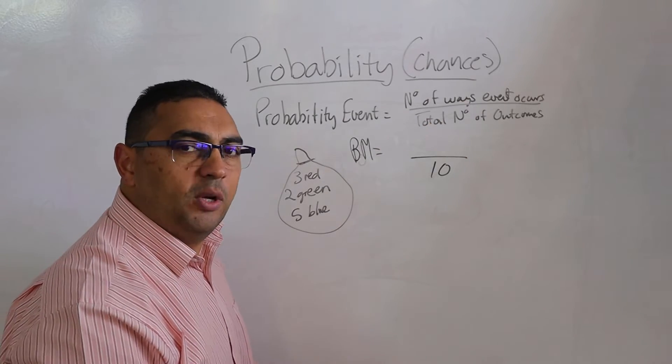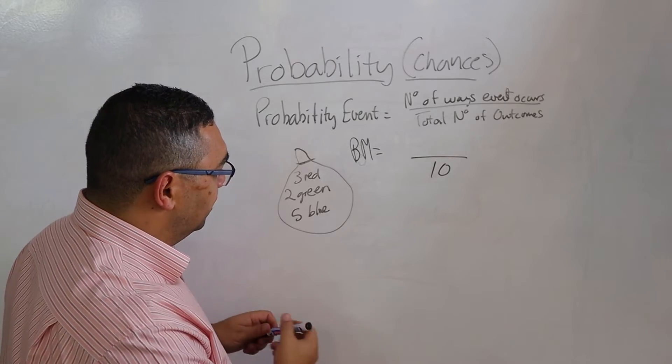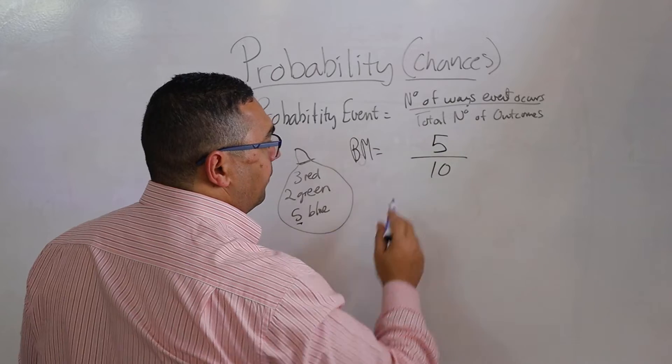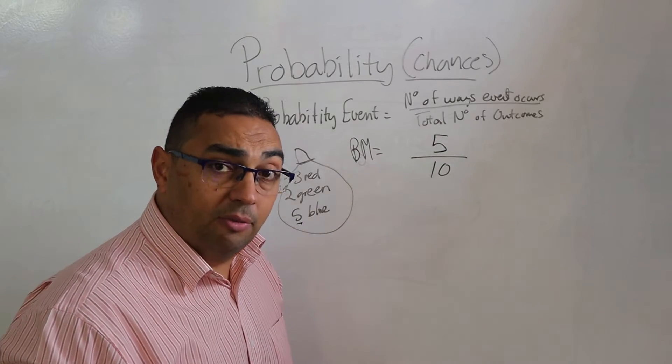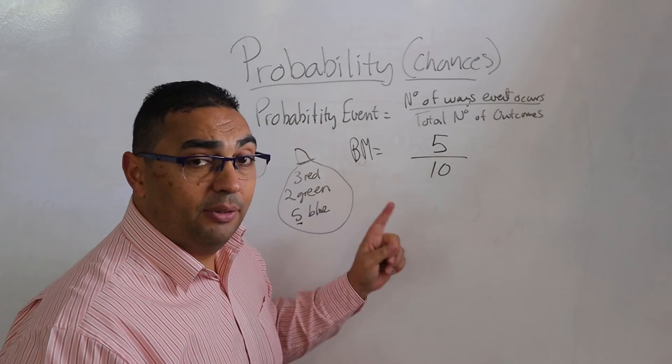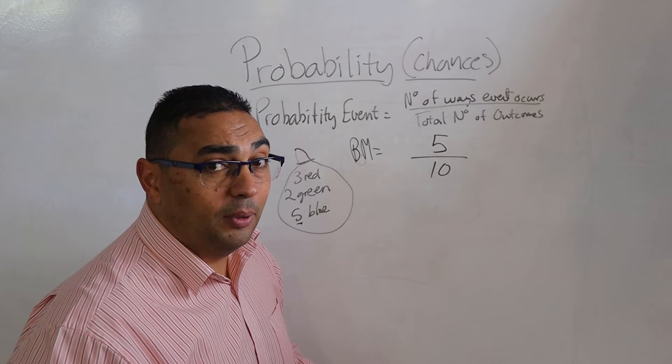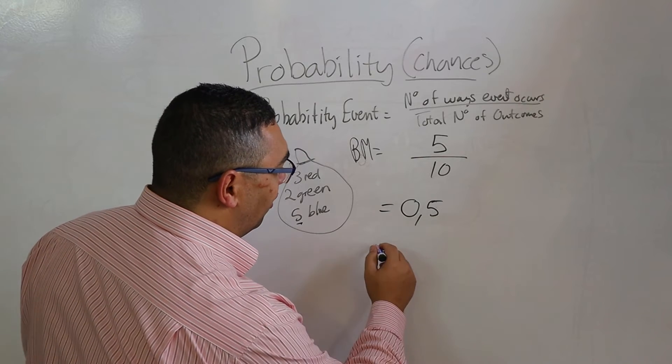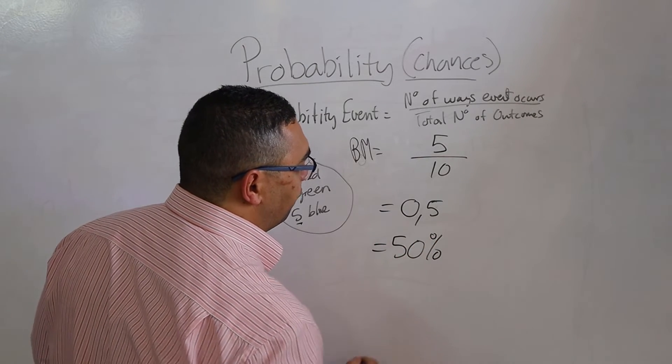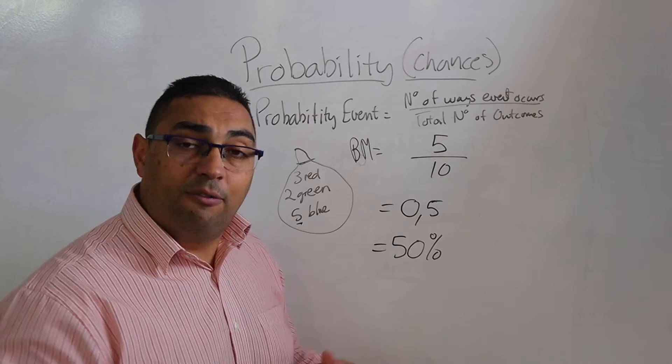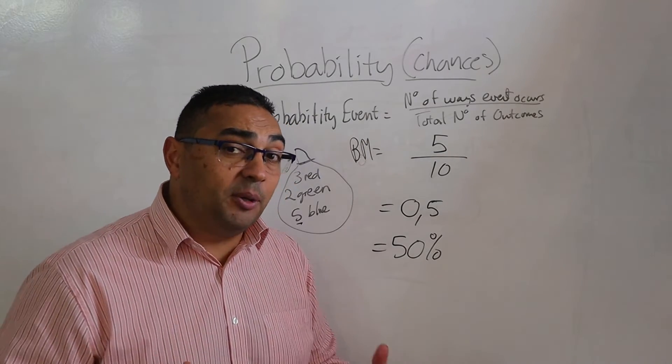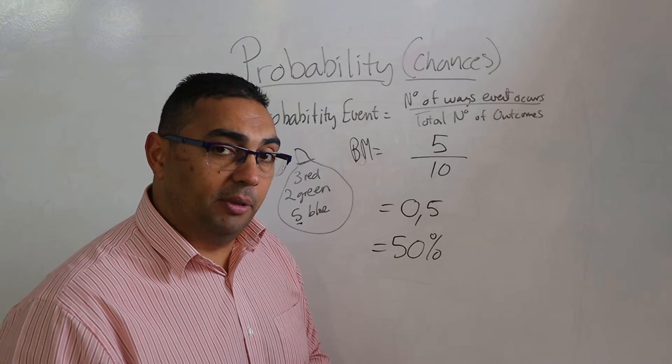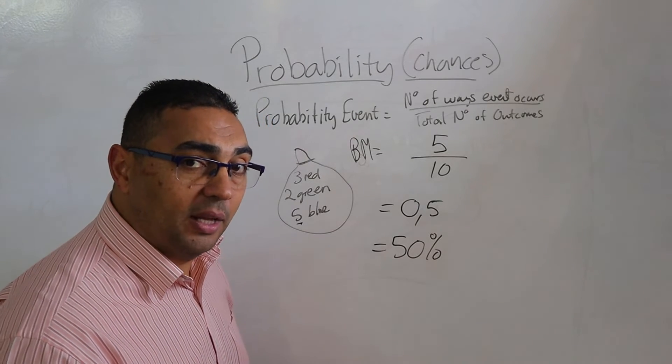Now the number of ways the event occurs—which event? The blue marble. How many do I have? I have five. And now I'm simply going to divide five into 10. What am I going to end up with? I'm going to end up with 0.5, or in other words 50%. There is a 50% chance, or 50% probability, that I might pull out a blue marble.